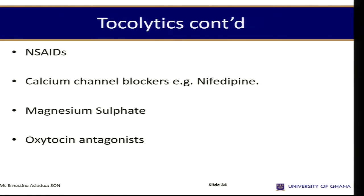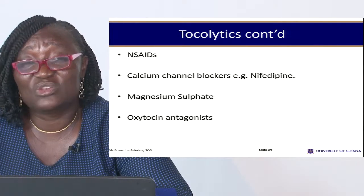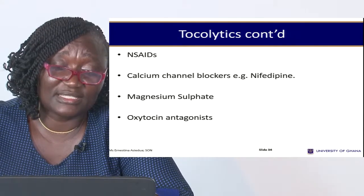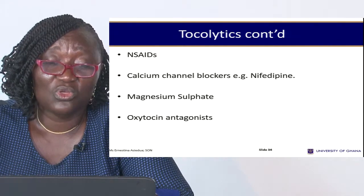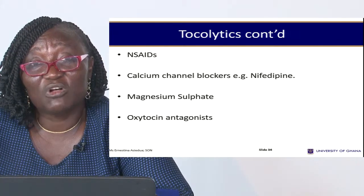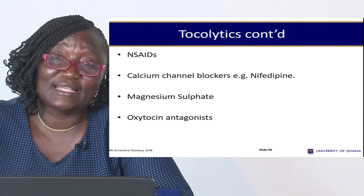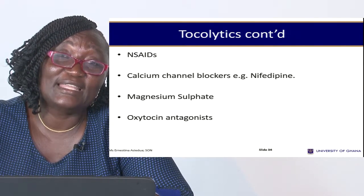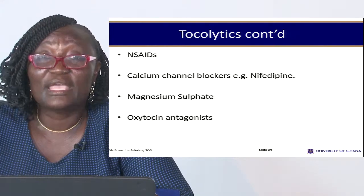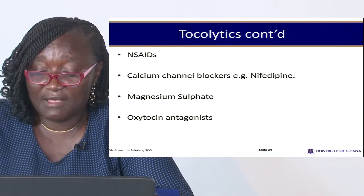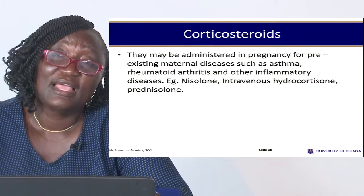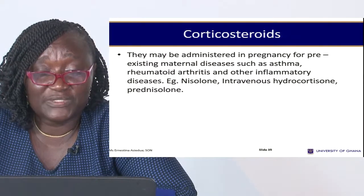We also have oxytocin antagonists — since oxytocin is for contractions, any drug that is an oxytocin antagonist will minimize contractions, making all oxytocin antagonists also tocolytics. Magnesium sulfate has also been found to be a very useful tocolytic — initially it was used to treat gastric ulcers and some abdominal conditions, but modern obstetric practice has found it very useful in this context.